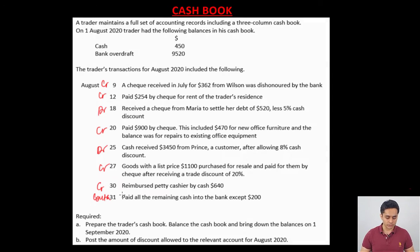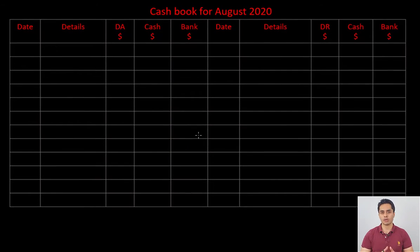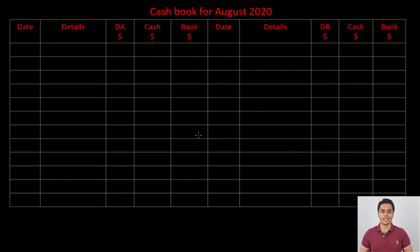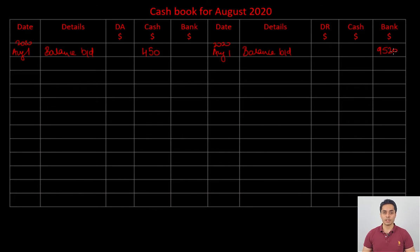Let's begin the cashbook. August 1 balances are brought down: cash 450 on the debit side — cash is an asset with a debit balance. But bank is an overdraft, which is a liability, so the balance of 9520 is brought down on the credit side as balance brought down.